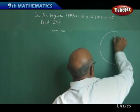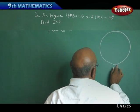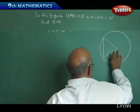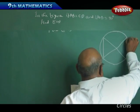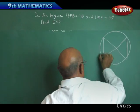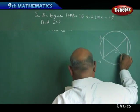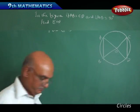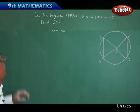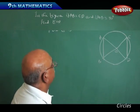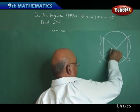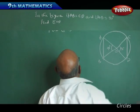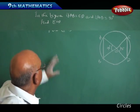The figure is given with points A, B, O, C, and D. In the figure, AB equals CD, and angle AOB is 90 degrees. If angle AOB is 90 degrees, naturally angle COD should also be equal to 90 degrees. We want to find out angle COD.